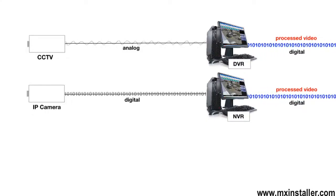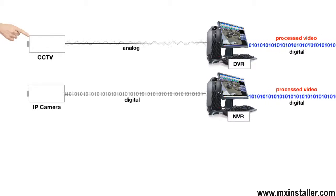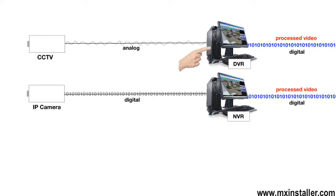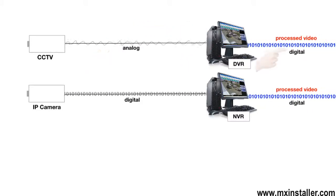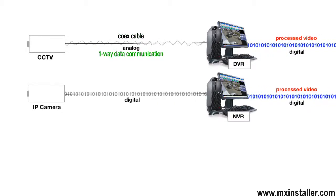Here we have a diagrammatic comparison to help give an idea of what an IP camera system is. The top diagram illustrates a typical CCTV system where analog video is streamed directly from the CCTV cameras to a central DVR. The digital video recorder converts the analog stream to digital video. Coaxial cable is used for the data delivery, which is only one way.